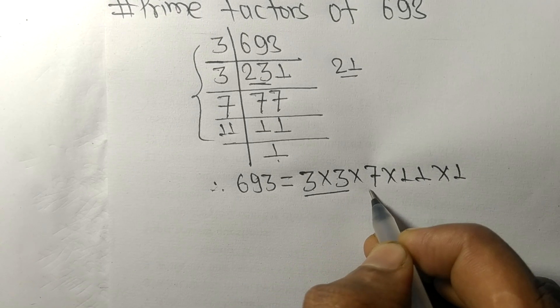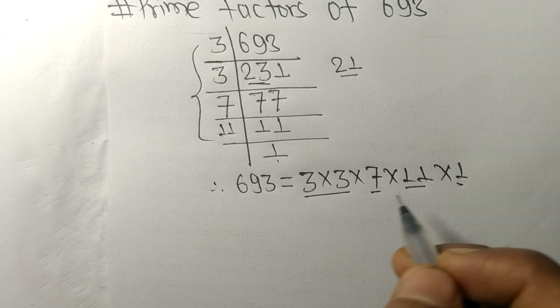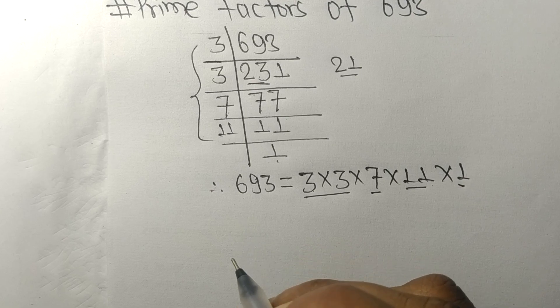So 3, 7, 11, and 1 are the prime factors of 693. So this much for today and thanks for watching.